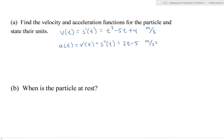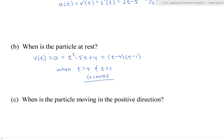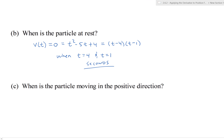Part b: When is the particle at rest? The particle is at rest when the velocity equals zero. Setting t² − 5t + 4 = 0 and factoring gives (t − 4)(t − 1) = 0, so the particle is at rest at t = 1 second and t = 4 seconds.